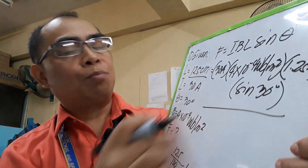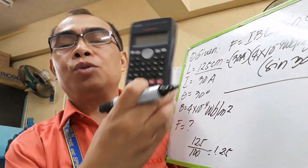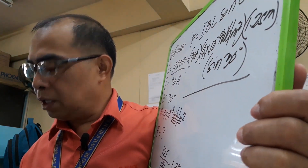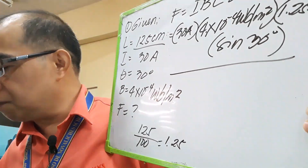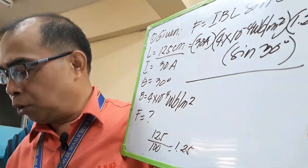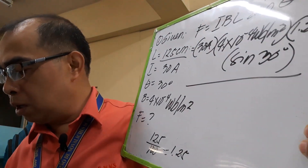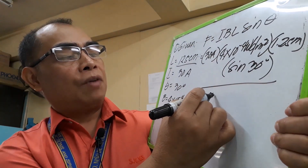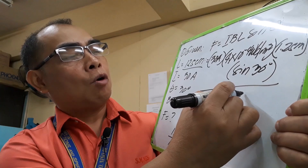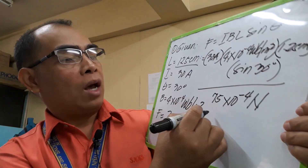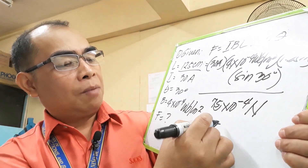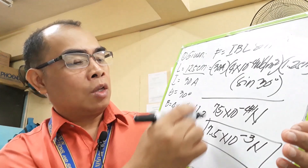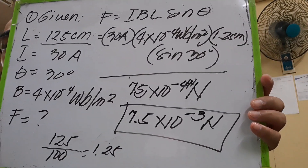Sin 30° = 0.5. So we multiply: 0.5 × 1.25 × 4 × 30 = 75 × 10⁻⁴ Newtons. Moving the decimal point, this becomes 7.5 × 10⁻³ Newtons. This is your answer for problem number 1.